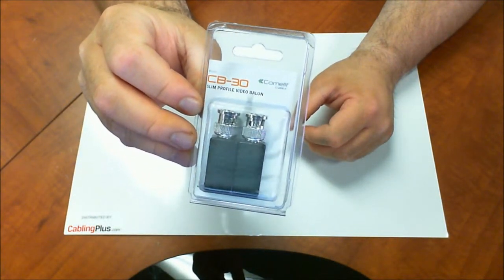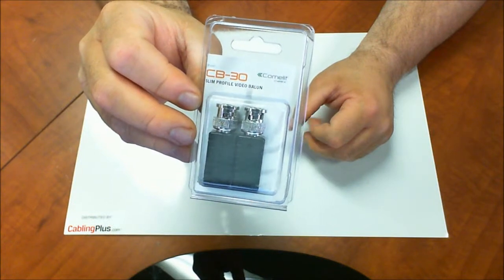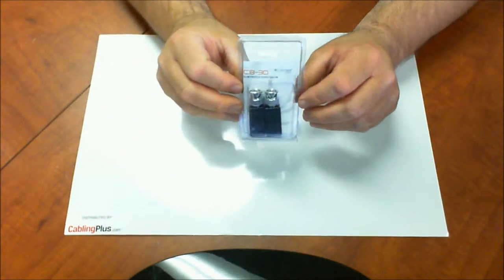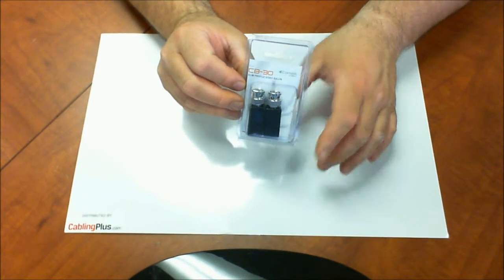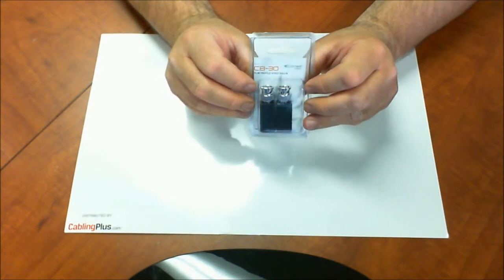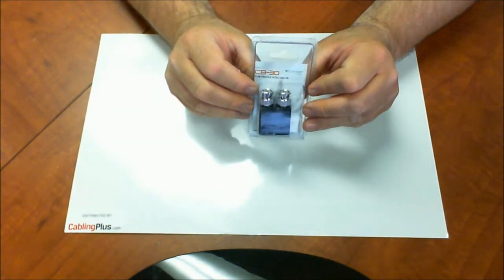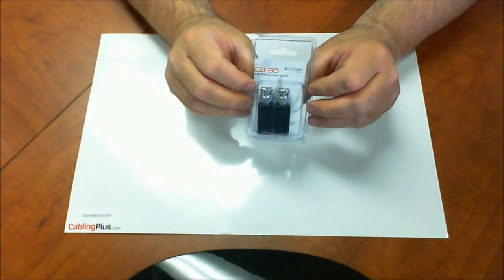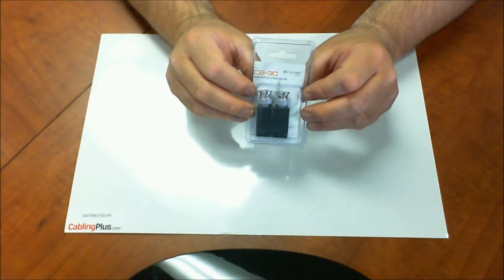It's basically a two-pack of CCTV baluns, and what people are doing now is a lot of people are choosing to use Cat5 or Cat6 to send video from the DVR to the cameras. Well, that's great, but eventually you're going to have to convert it to a BNC connection.